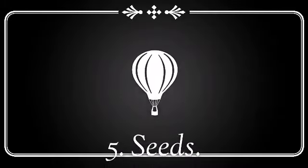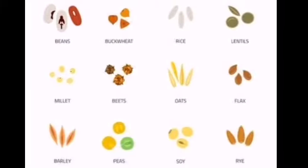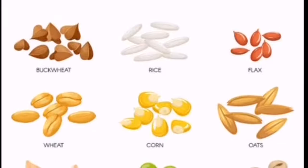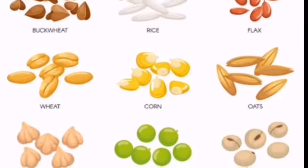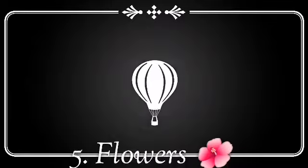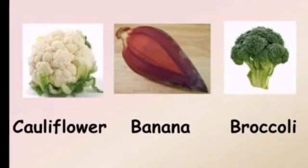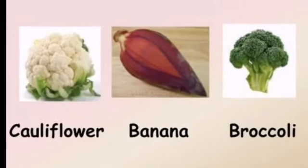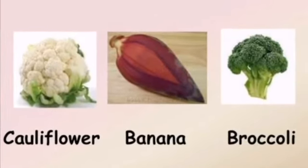Number 5 is seeds. The seeds of some grasses are called cereals, for example wheat, rice, maize and oats. They are also used in making many food products. Number 6 is flowers. The flowers of cauliflower, broccoli and banana are used as vegetables.